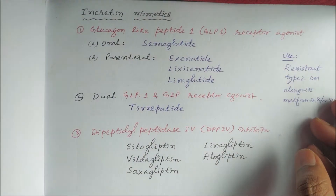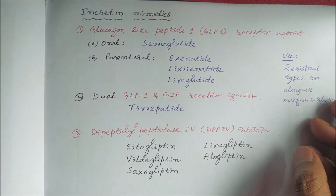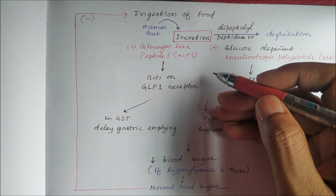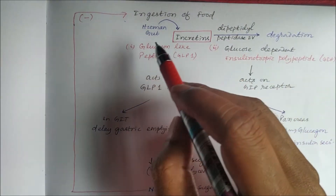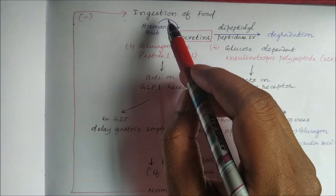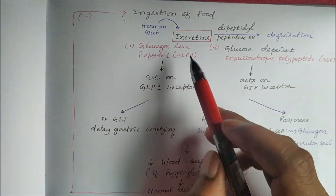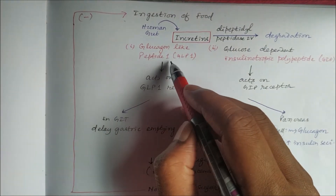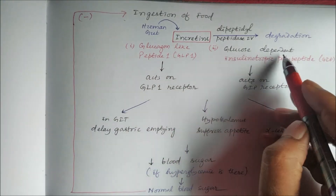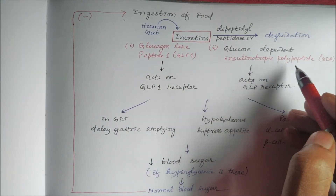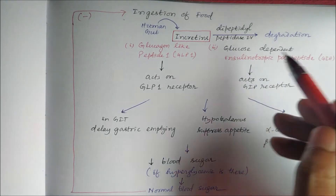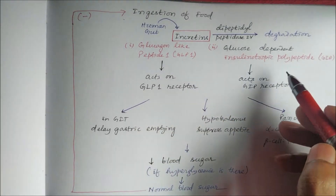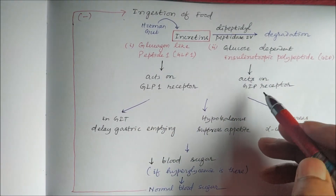In addition to insulin, we now have another hormone called incretins, which are gut hormones. In response to food ingestion, the human gut releases two hormones called incretins: one is Glucagon-Like Peptide-1 (GLP-1) and the other is Glucose-Dependent Insulinotropic Polypeptide (GIP). These incretins act on their specific receptors — GLP-1 acts on the GLP-1 receptor and GIP acts on the GIP receptor.